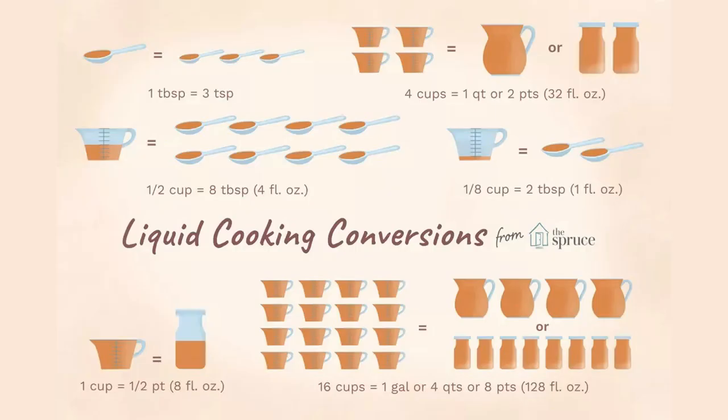If using kitchen scales, it is worth remembering that one fluid ounce of water corresponds to exactly one ounce in weight. This principle also applies to liters — one milliliter of water is one gram in weight. Use this as your key metric when measuring your liquid. For example, if you need half a cup of water, it should weigh 4 ounces or 125 grams.